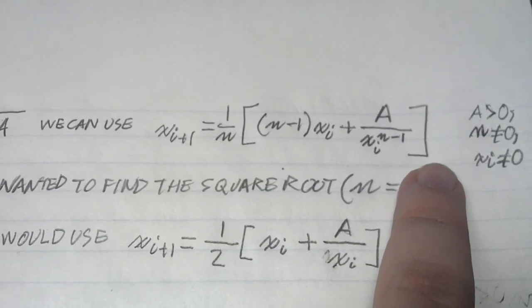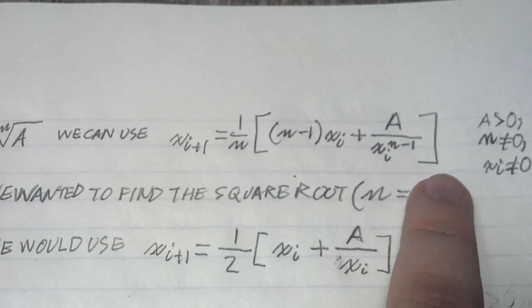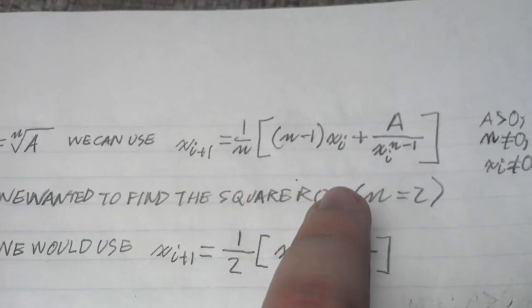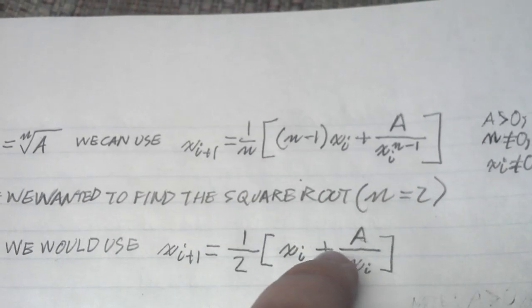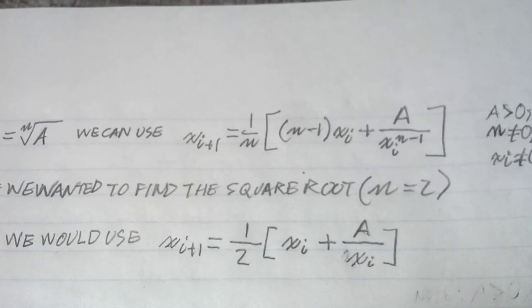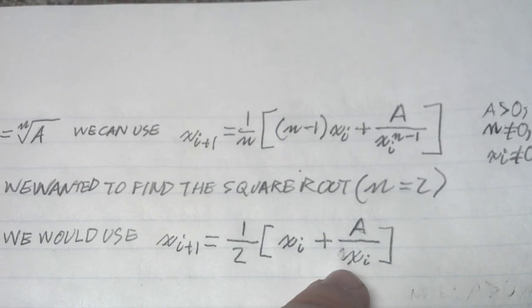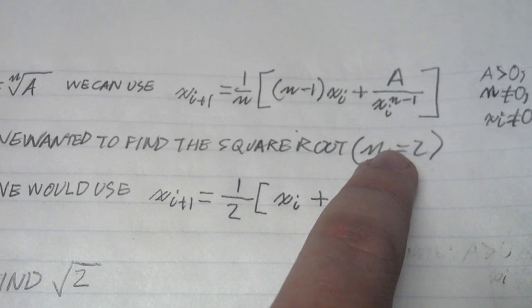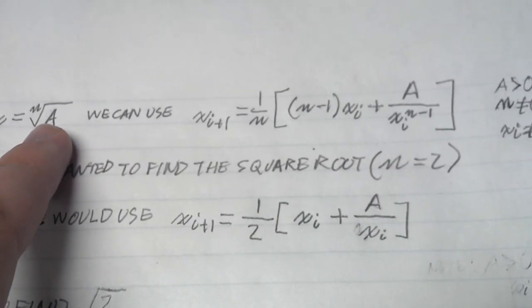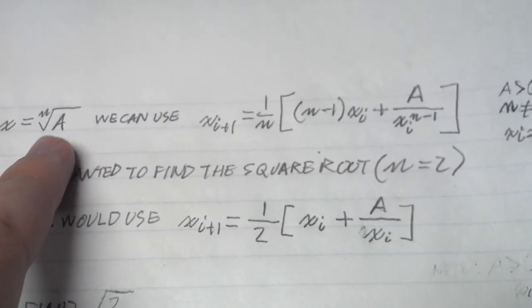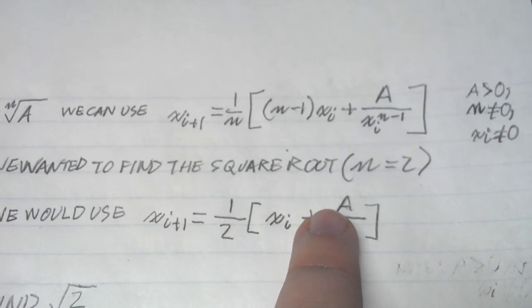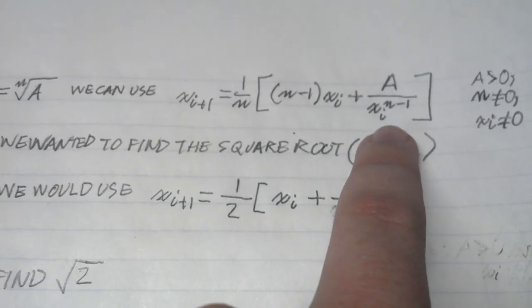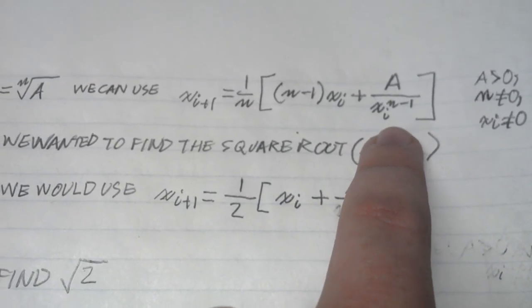a must be greater than zero because if it is zero, the answer is zero, and if it's less than zero, it's imaginary. n cannot be zero because there is no zeroth root of a number. And your initial guess cannot be zero because you'd end up with a divide by zero error.